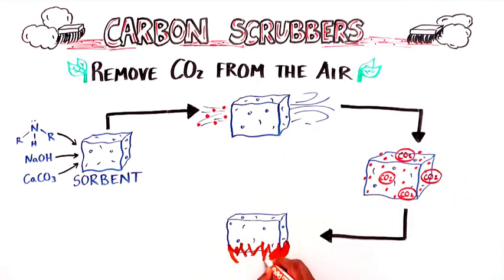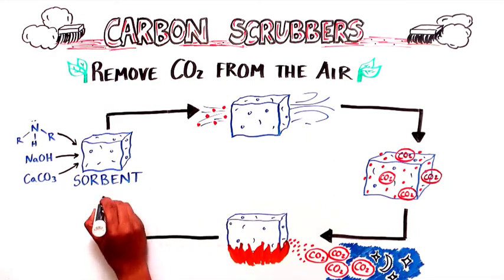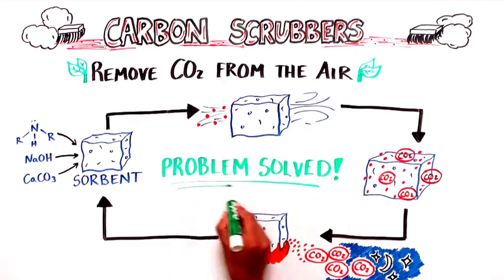The sorbent material is then regenerated by heating it up, causing the sorbent to release the carbon dioxide out into space. The sorbent is then cooled down so it can go back to absorbing more CO2. Problem solved!